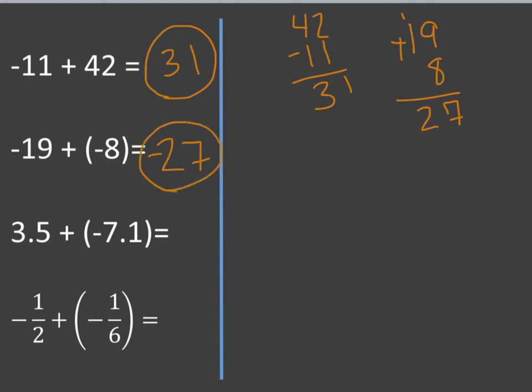3.5 plus negative 7.1. My signs are different, so I'm going to subtract the numbers. So 7.1 minus 3.5. I'm going to borrow there. That is 6 and 3.6. Now my larger number is 7.1, so I'm going to keep the negative sign. And there's my answer.